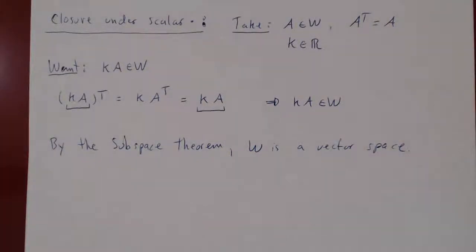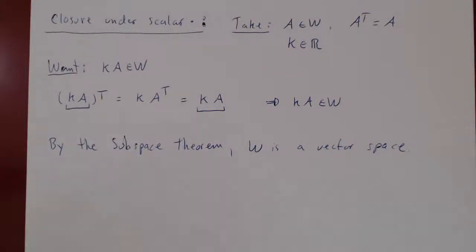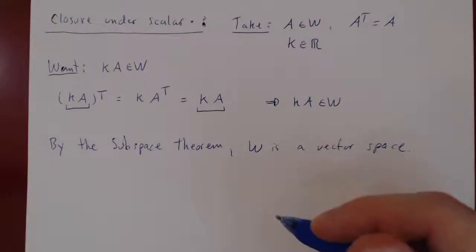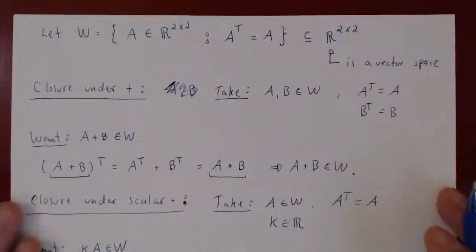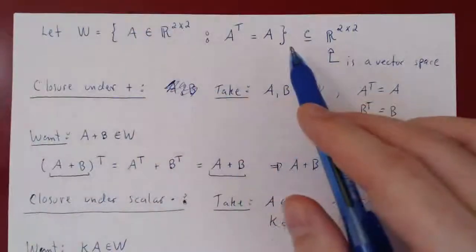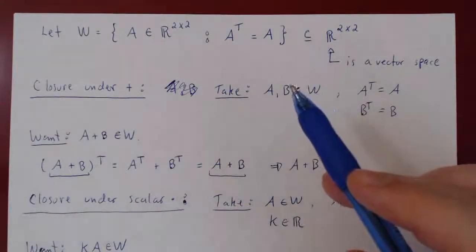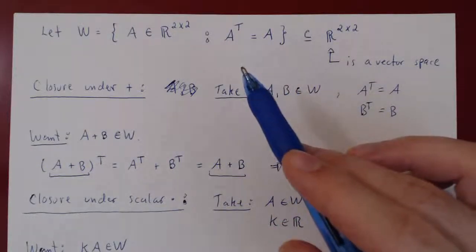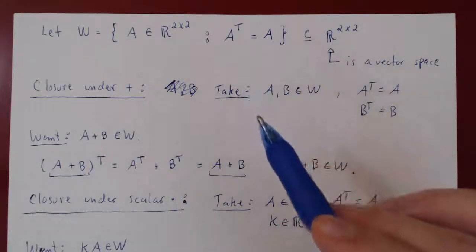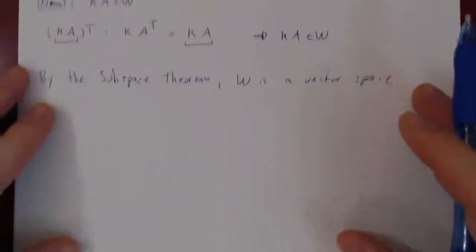Now that we've proved the set of 2 by 2 symmetric matrices is a vector space — namely a subspace of R^{2×2} — we are going to find a basis and the dimension of our space. To find a basis, we need to find the elements of our space explicitly.